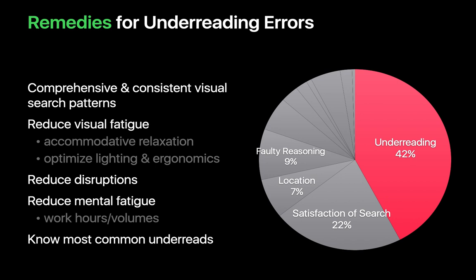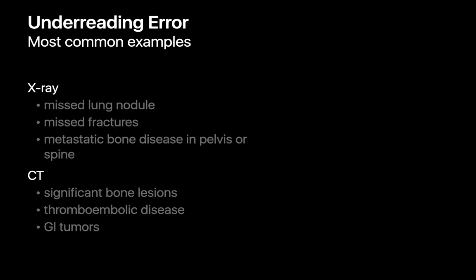Knowing the most commonly occurring under-reading errors is important. These include missed lung nodules, missed fractures, and skeletal metastases in the spine and pelvis on x-rays, as well as bone lesions, blood clots, and GI tumors on CT.